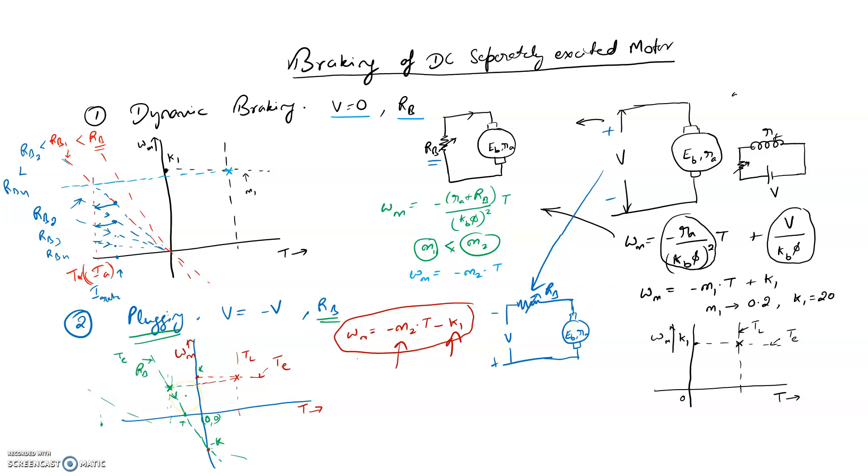In industrial use, dynamic braking is preferred because there is no risk of the motor going into negative speed as can happen with plugging. That is all for the braking of DC Separately Excited Motor. Thank you very much.